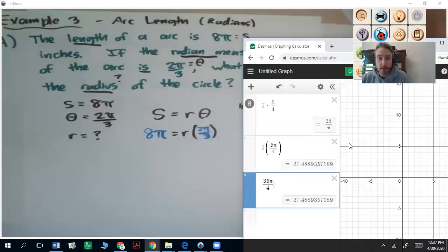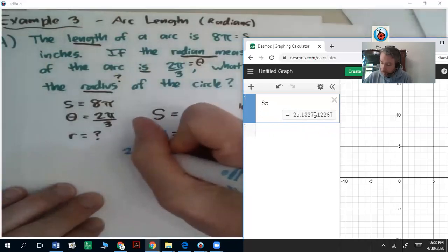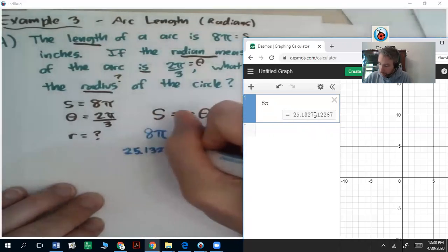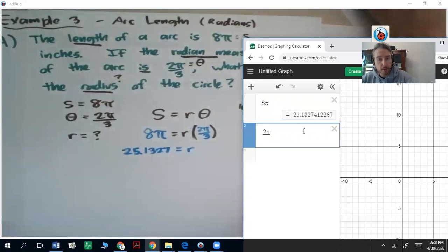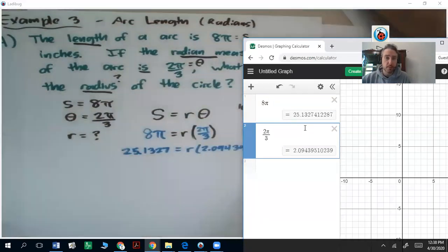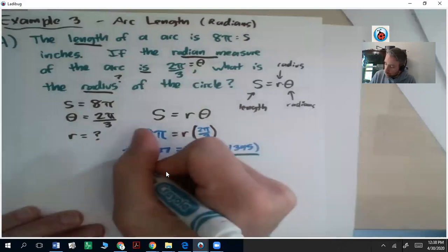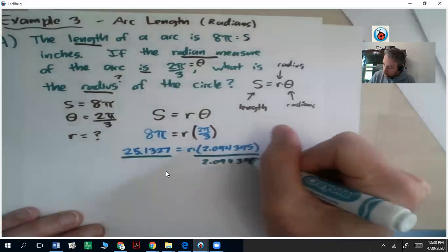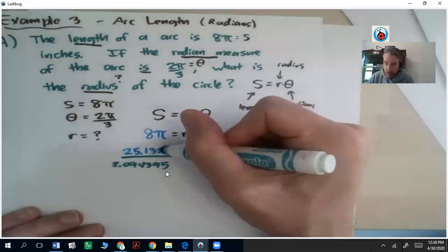So 8π as a decimal is approximately 25.1327. You can go out as far as you want on that, but if you're going to do this using a calculator, you want to go out some places here. 2π over 3 as a decimal is 2.094395. And you can go on forever if you want. But the idea here is that you have the numbers now, you can divide to solve for r. So we're going to divide both sides by 2.094395.